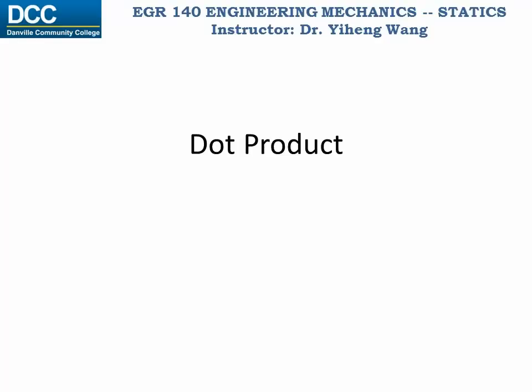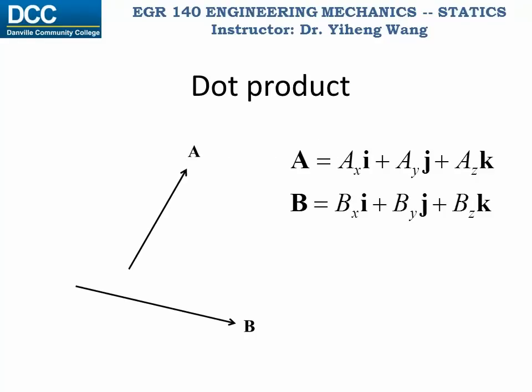Dot product of two vectors. For two arbitrary vectors A and B expressed as Cartesian vectors, their dot product is a scalar and is defined algebraically as the sum of the products of their respective i, j, and k components.